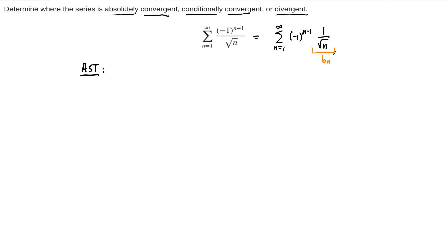The second part is to analyze the term b sub n. The criteria for applying the alternating series test is that b sub n should always be non-negative — usually always positive — and secondly, that b sub n should be decreasing, so b sub n plus 1 should be less than or equal to b sub n. As n increases, the b sub n should decrease. If these two criteria are met, then we can apply the alternating series test.